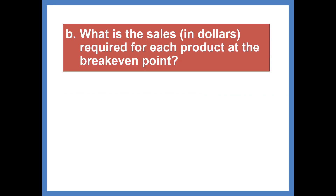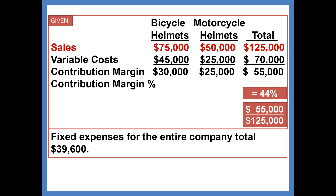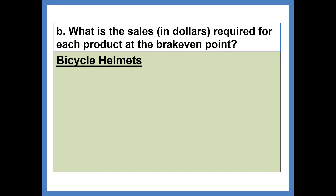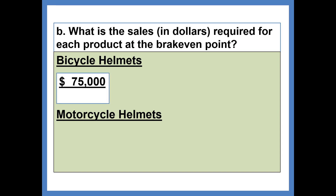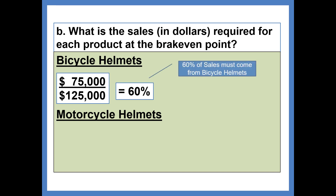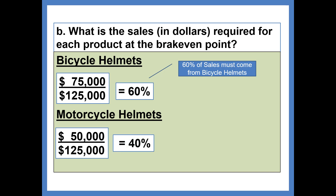What is the sales in dollars required for each product at the break-even point? Here's where we want to break it out between bicycle helmets and motorcycle helmets. Referring back to the information given, $75,000 of sales come from bicycle helmets and $50,000 from motorcycle helmets, for a total of $125,000 — that helps us calculate the sales mix. For bicycle helmets, the sales mix is $75,000 divided by $125,000, or 60%. For motorcycle helmets, sales are $50,000 out of $125,000, so the sales mix is 40%.